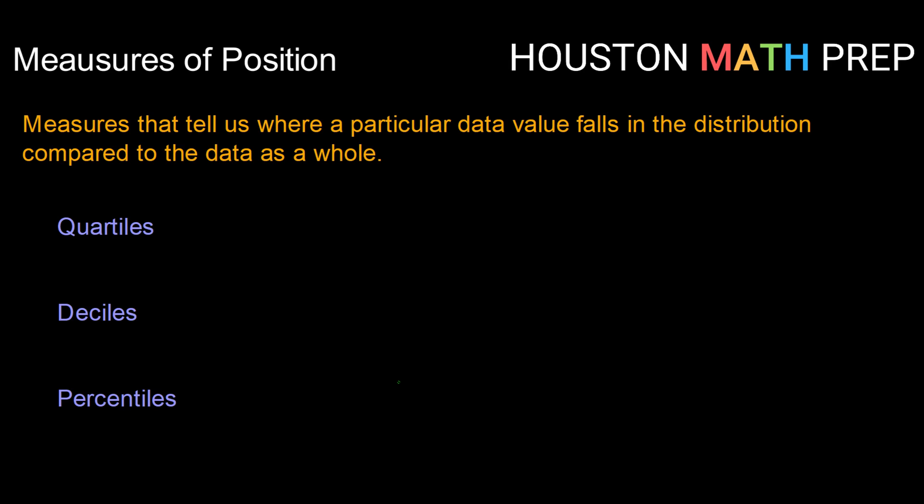A measure of position is a measure that tells us where a particular data value falls in the distribution compared to the data as a whole. Is a data value in the bottom half, in the top half? Is it really close to the top? Is it in the top 30%? Those types of measures are measures of position.